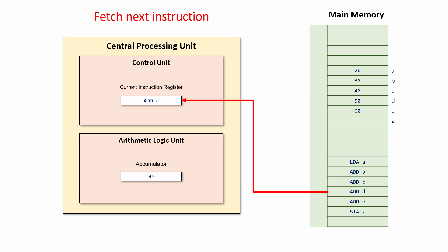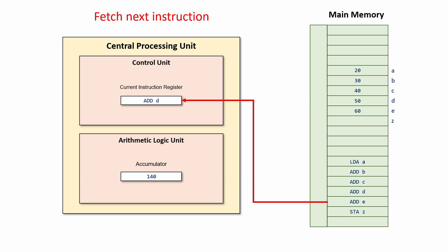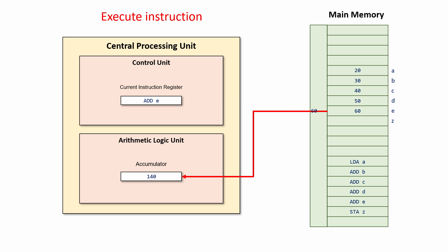The cycle continues. The next instruction is fetched from the memory into the current instruction register, overwriting what's already there. This instruction says: add whatever's in variable C to whatever's in the accumulator. So you can see that the accumulator is now accumulating the result of the calculation. The next instruction is fetched — Add D — and the contents of memory location D will now be added to whatever's inside the accumulator. You can see the value in the accumulator is getting bigger and bigger.